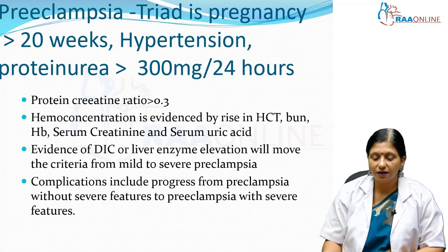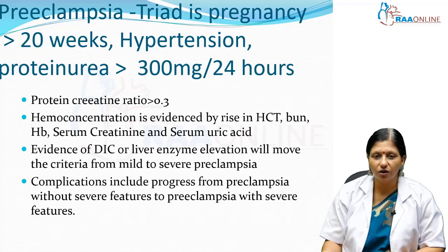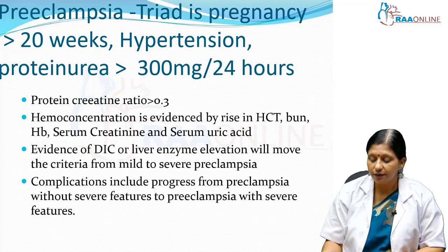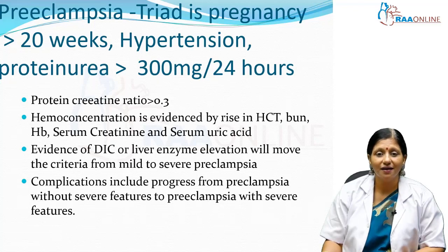In pre-eclampsia, the obstetrical triad consists of pregnancy more than 20 weeks, hypertension, and proteinuria of more than 300 milligrams in 24 hours. There is also the protein-creatinine ratio (PCR) — a urinary PCR of more than 0.3. Pre-eclampsia is also accompanied by hemoconcentration, evidenced by a rise in hematocrit, blood urea nitrogen, hemoglobin, serum creatinine, and serum uric acid.